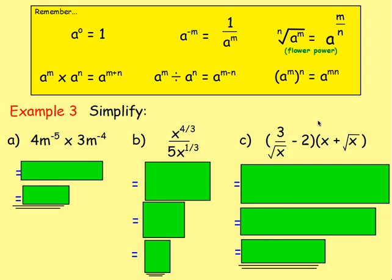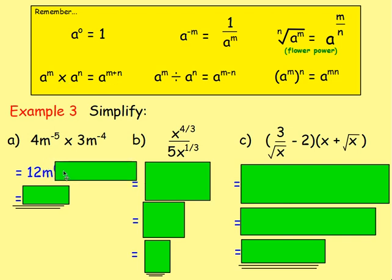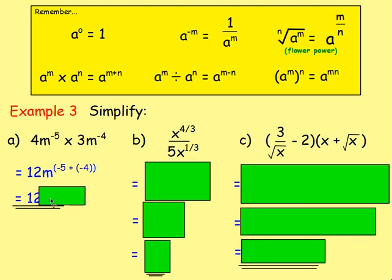Simplifying 4m to the power of negative 5 times 3m to the power of negative 4: multiply the large numbers — 4 times 3 gives 12. For m to the negative 5 times m to the negative 4, when you're multiplying you add the indices, so it's m to the power of negative 5 add negative 4. Remember, when you add a negative you're subtracting, so you get 12m to the power of negative 9.